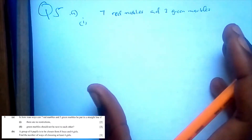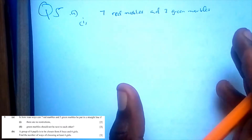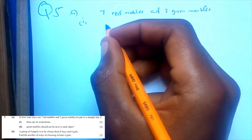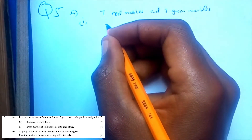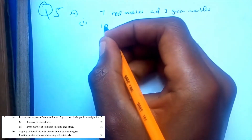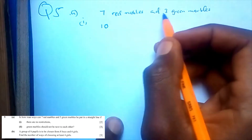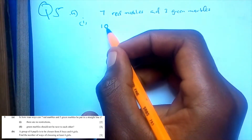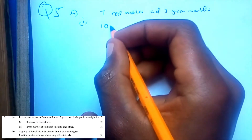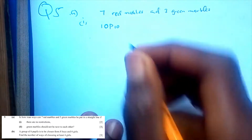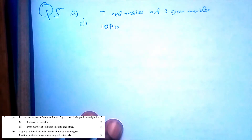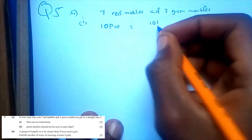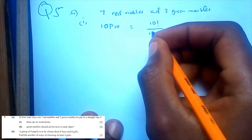Since there's no restriction, the total number of marbles is 10 — 7 plus 3 is 10. So what you do is, this is just the same as 10 permutation 10, which is just the same as 10 factorial over (10 minus 10) factorial.